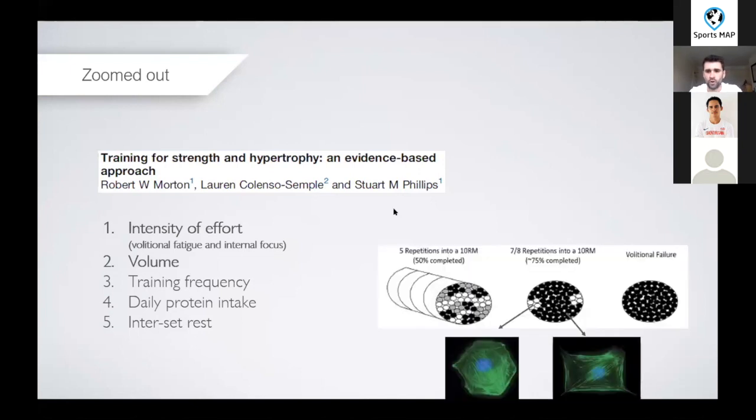If we join those two together, we have a bit of a conceptualization here of how the concepts of fatigue and mechanical tension interrelate. In the first one here we've got like five reps into a ten rep max set, and then we've got seven or eight reps into a ten RM, and then we've got volitional failure.